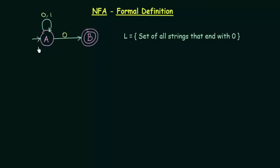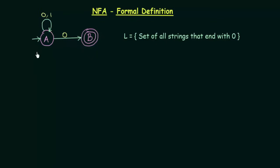Here we have the example of an NFA. It is actually a machine which accepts the set of all strings that end with 0. If we look at this, we see that on getting 0 it comes to B, which is the final state represented by double circles. So we know that it is the set of all strings ending with 0 that is accepted by this NFA.